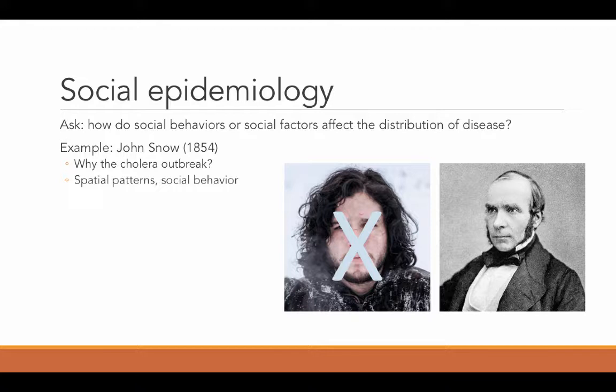It was because the cases were concentrated around water pumps that he discovered the disease was transmitted through people sharing the water pump. Somebody who was infected would go to the water pump, contaminate it, and other people would get water from there and become contaminated as well. The end of the outbreak came when they decided to shut down the water pump. That's the classic example of what social epidemiology can do — understanding the pattern of disease and figuring out how to intervene.